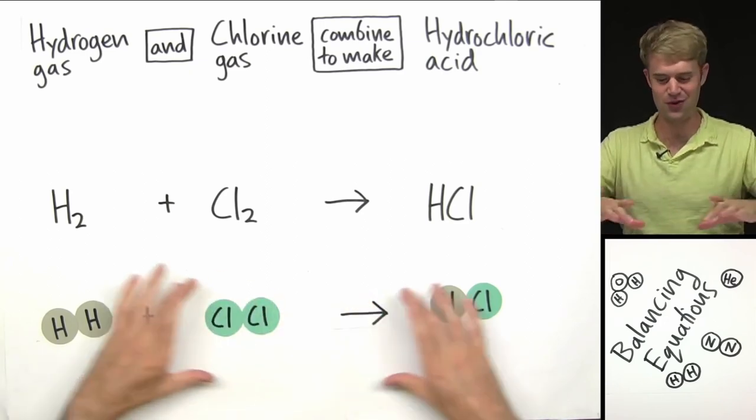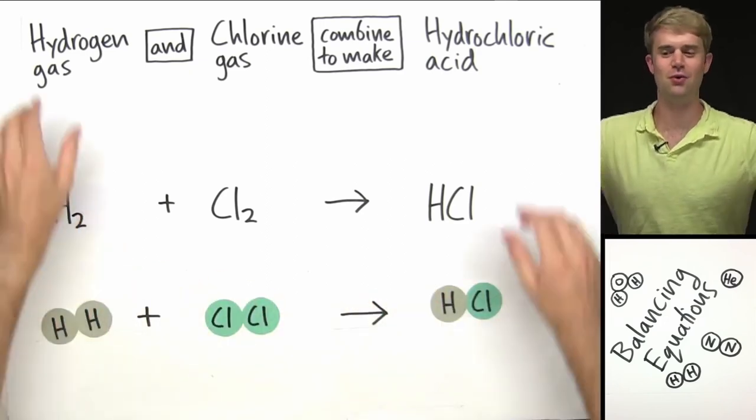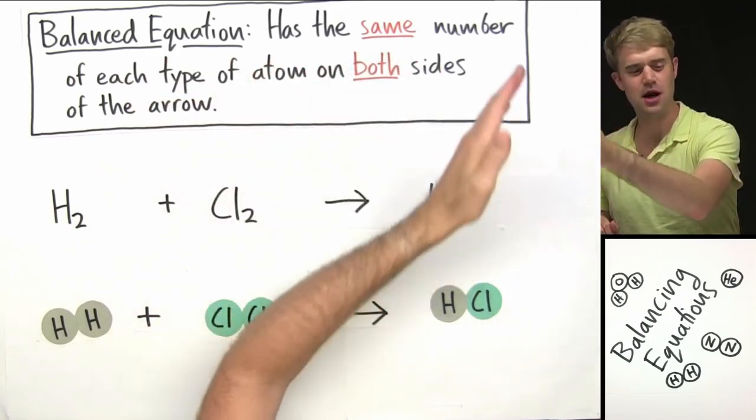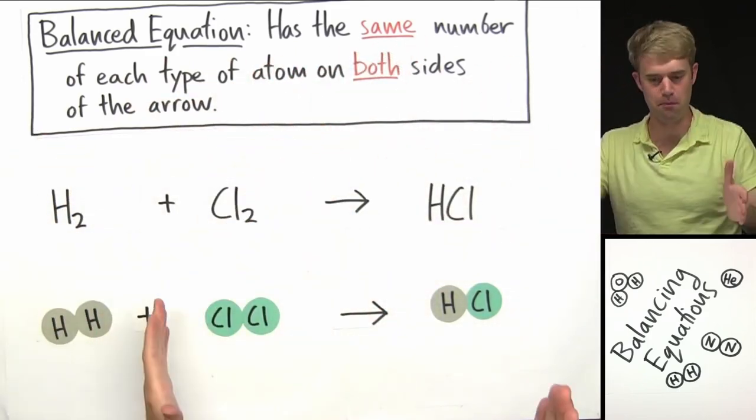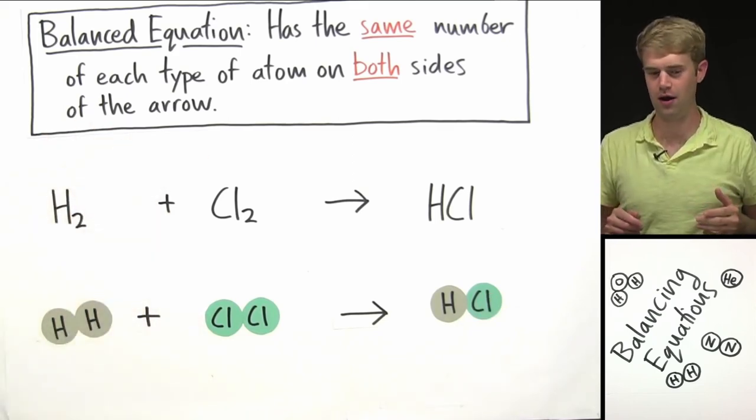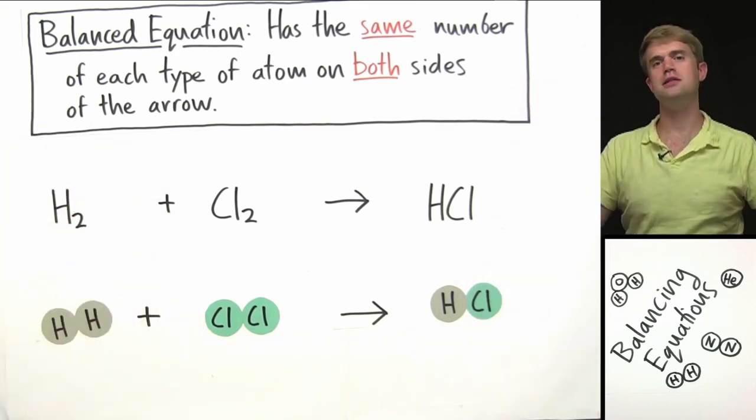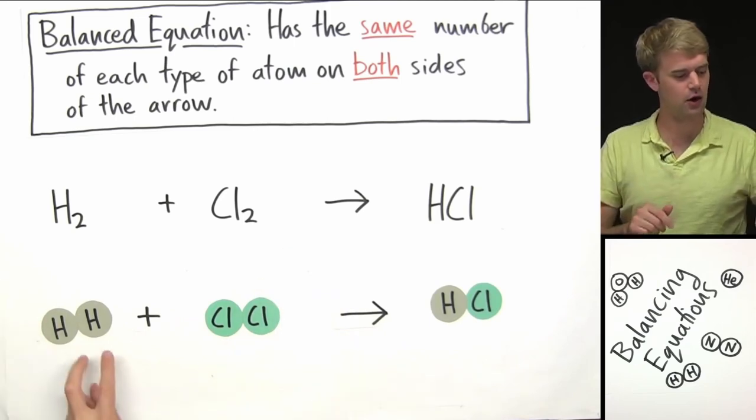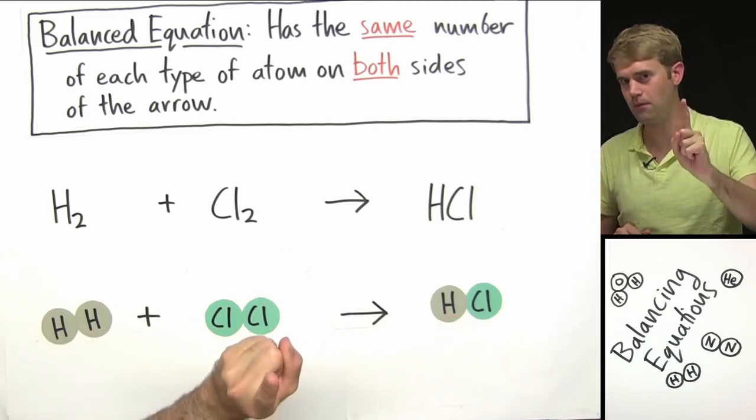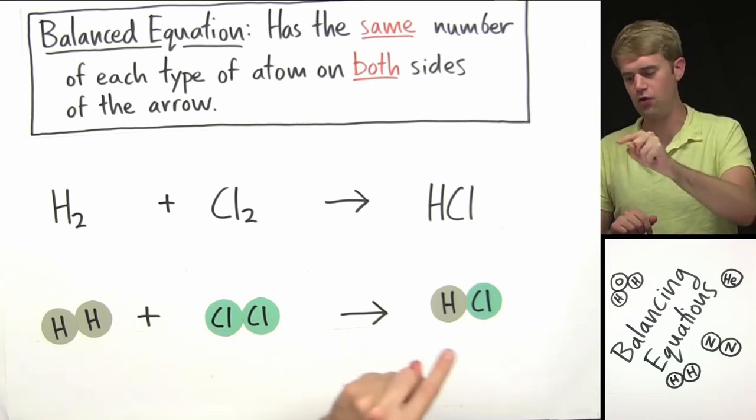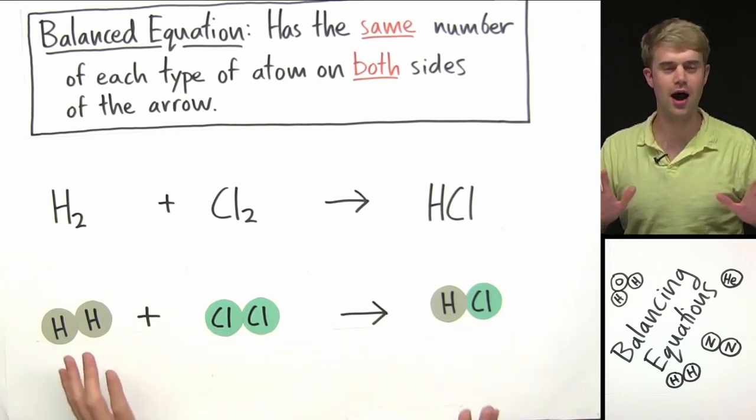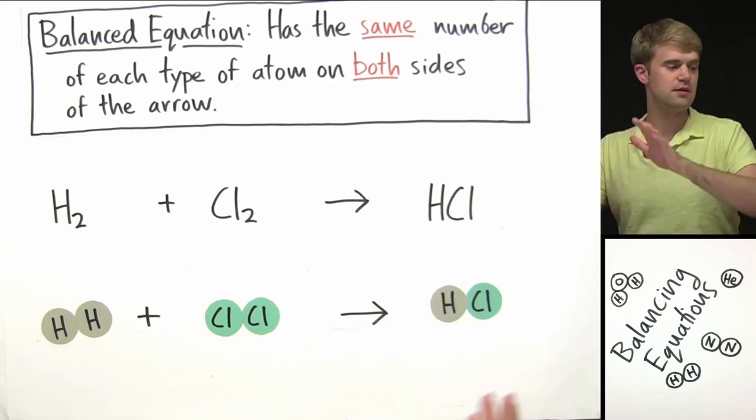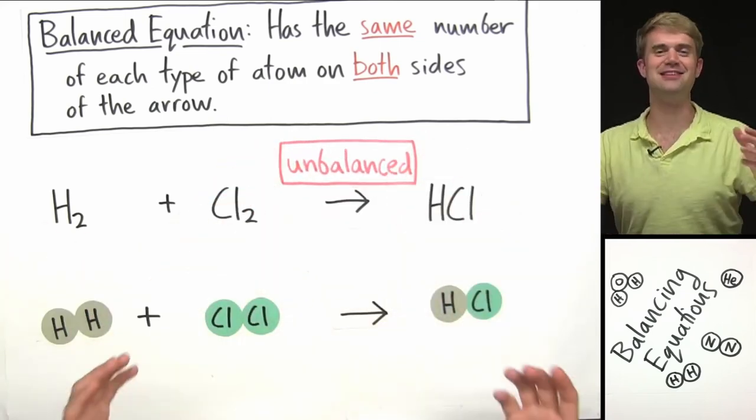So now we're going to start talking about balancing equations and balanced equations. First thing that I want to do is figure out whether this equation here is a balanced equation. A balanced equation has the same number of each type of atom on both sides of the arrow. Okay, so keeping this definition in mind, what I have right here, is this a balanced equation? No, it's not. Here's why. On this side of the arrow, I have two hydrogen atoms. Over on this side, I only have one. Over here, I have two chlorines. And over here, I only have one. So this is not a balanced equation. We don't have the same number of each type of atom on both sides.